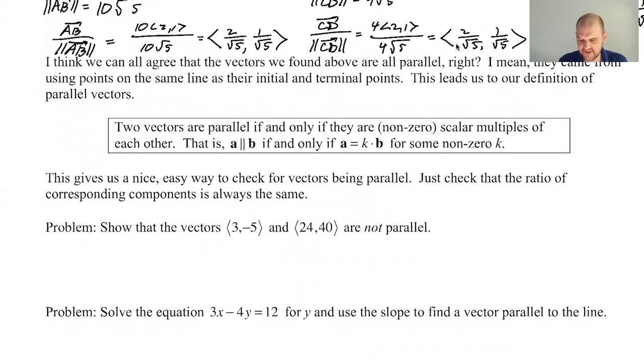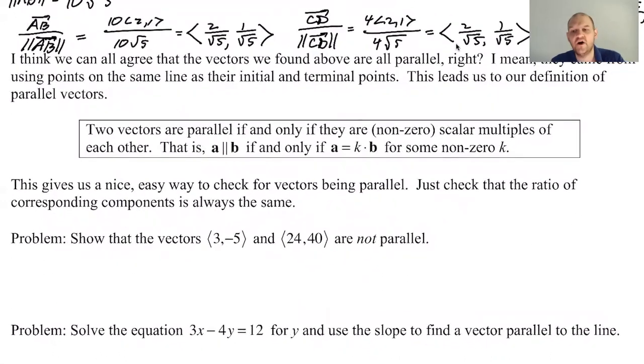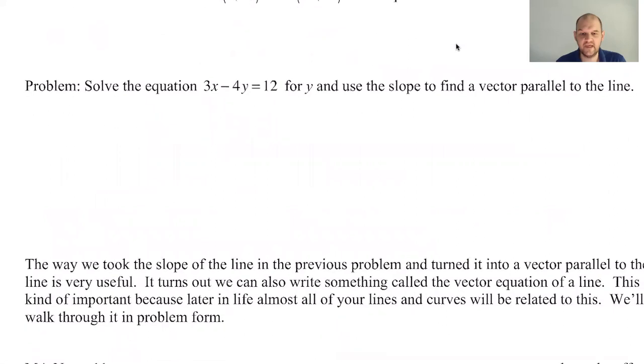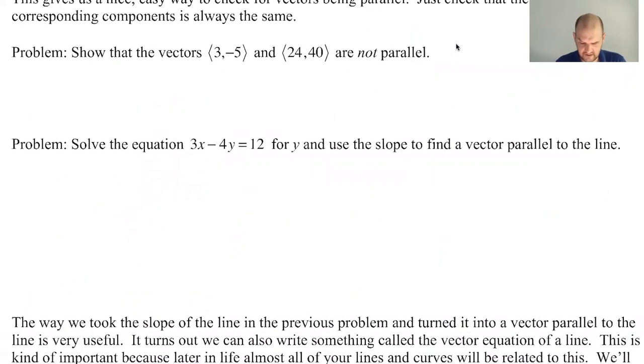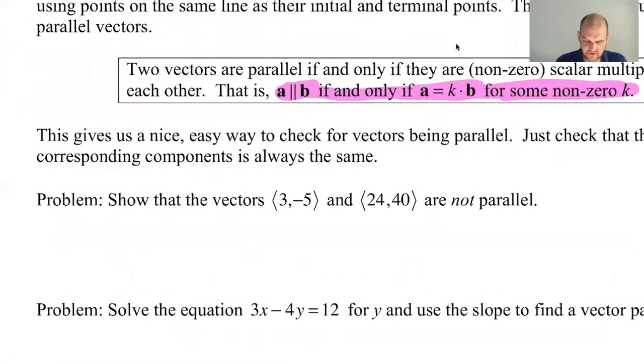Let's look at this definition. Here's a definition of parallel vectors. Two vectors are parallel if and only if they are non-zero scalar multiples of each other. That means that a is parallel to b if and only if a equals k times b for some non-zero k. This is great. This gives us a really quick way that we can work with this.